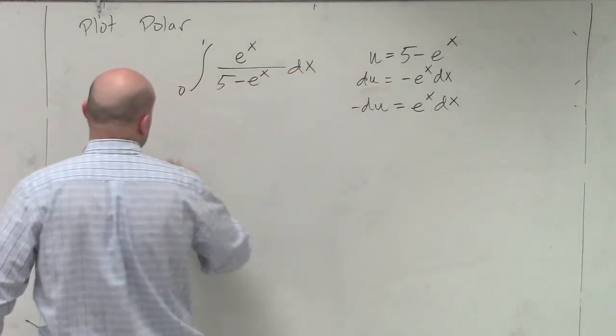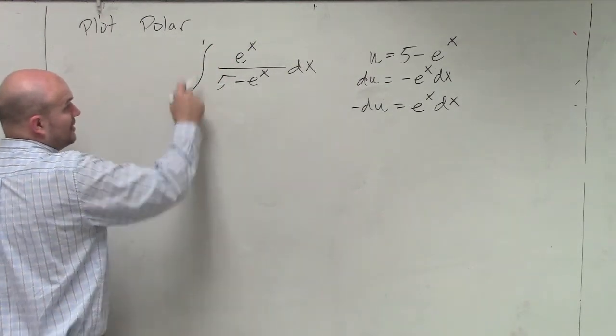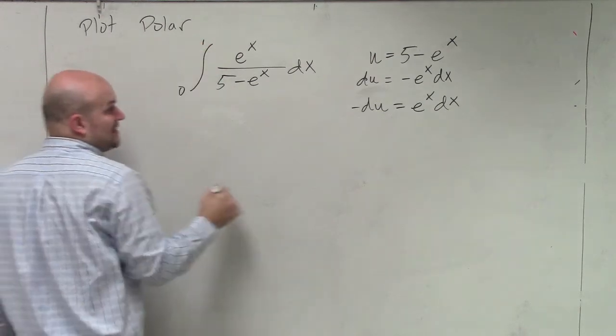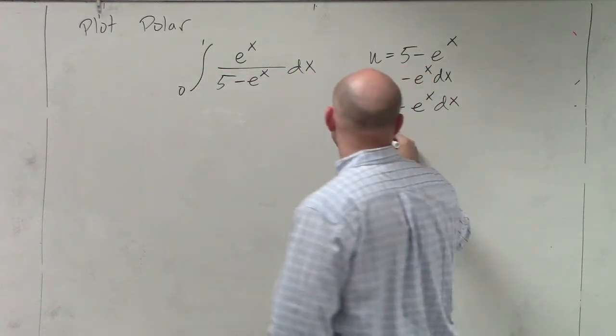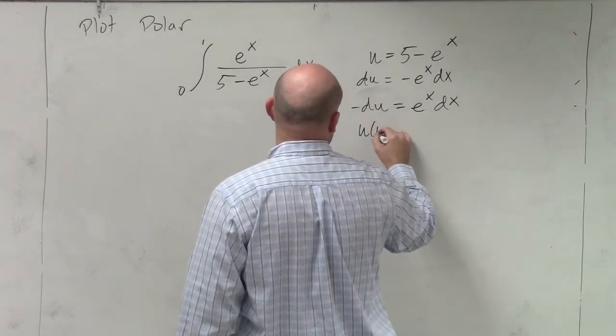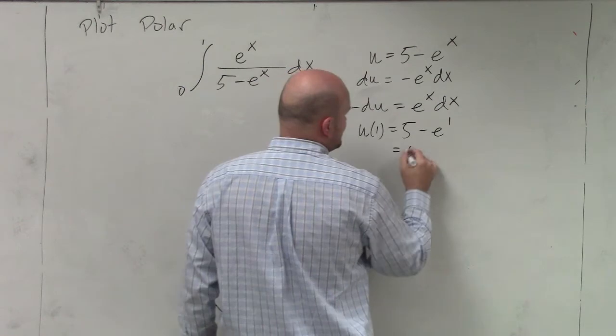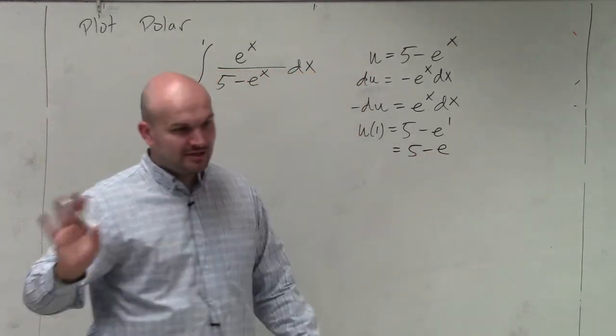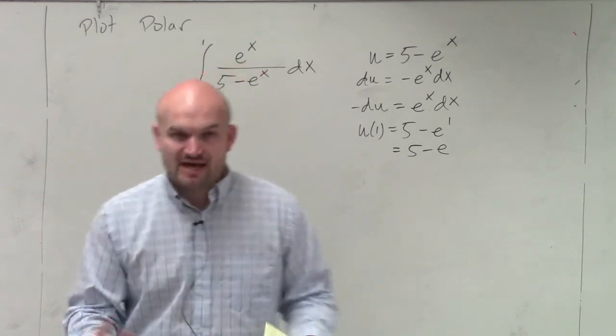And therefore, I just make sure when I plug this in with u that I have a negative. So now, and also the other thing is I have these bounds, right? So I want to change my bounds since I'm going to integrate with u with respect to u. So I'm going to do u(1), which is 5 minus e to the 1, which is just 5 minus e. I'm not going to use a calculator, even if I had a calculator, unless they ask for an approximation.